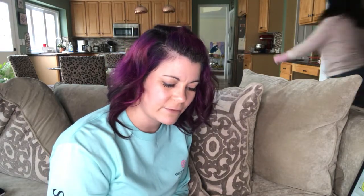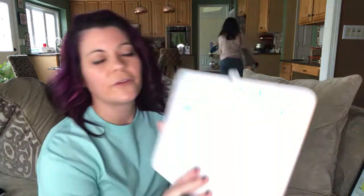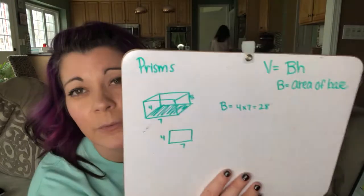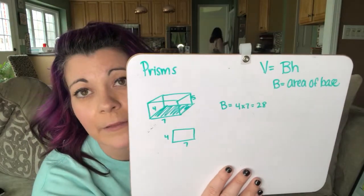So if you want to just rewrite the rectangle, you can. Area of a rectangle is just length times width. So four times seven, which is 28. So that's the area of the base.